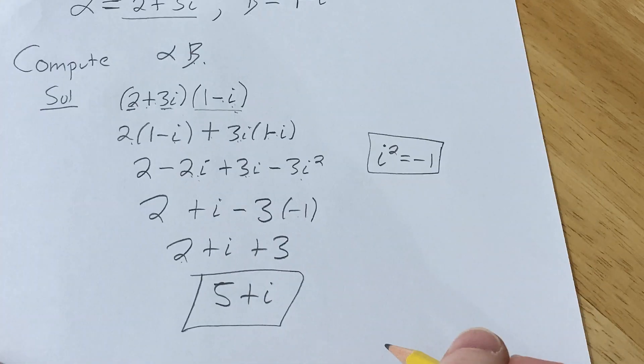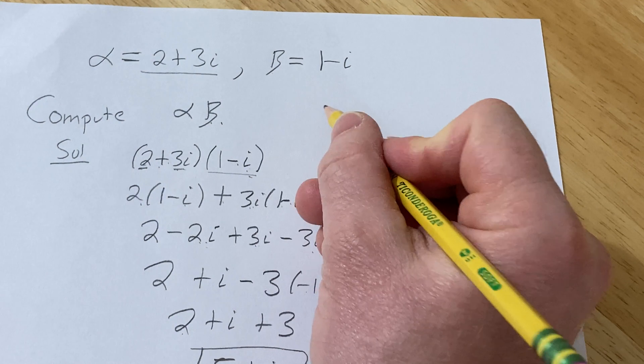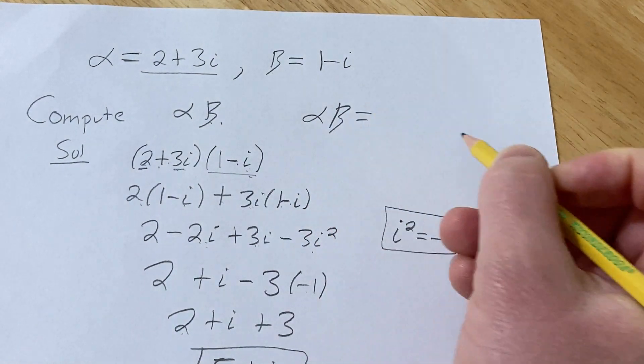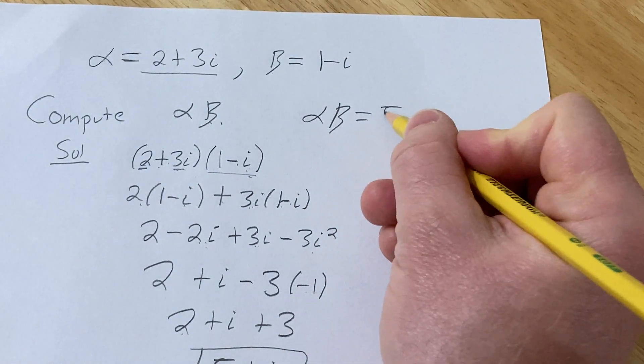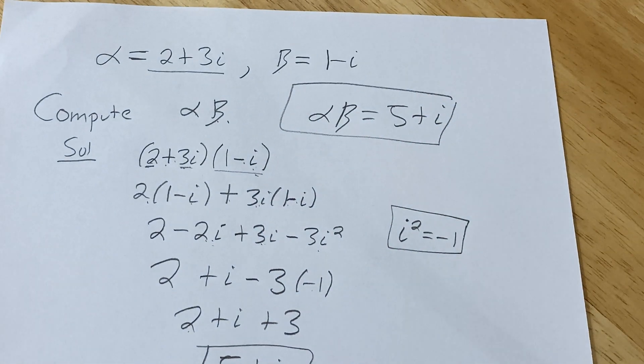And that would be the product of the complex numbers in this example. So in this particular example, we have that alpha times beta is equal to the complex number 5 plus i. That's it. I hope this video has been helpful to you. Good luck.